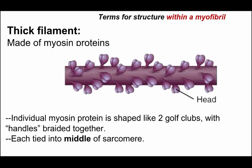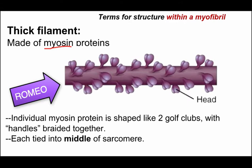The thick filament is made of a protein called myosin — a huge, complex protein. Each myosin molecule has two club-like heads, and if you think of it as a golf club, the shafts of two golf clubs are braided together. The myosin molecules are bound internally to one another and also bound into the middle of the sarcomere at the M-line, which is where myosin is anchored.